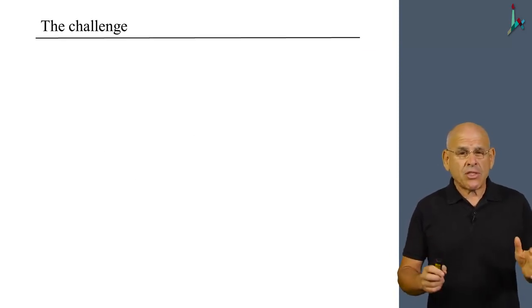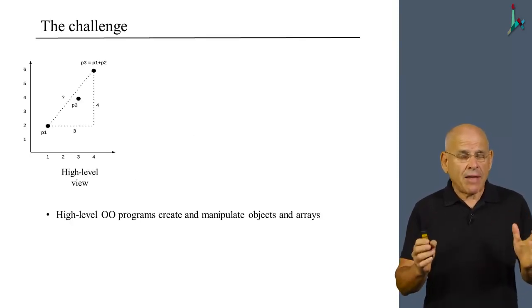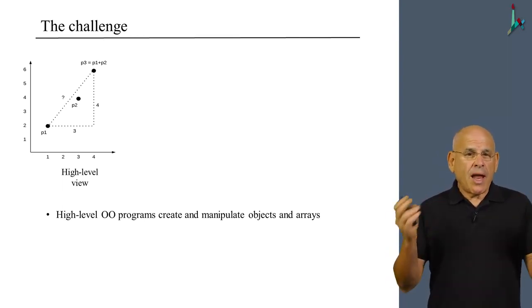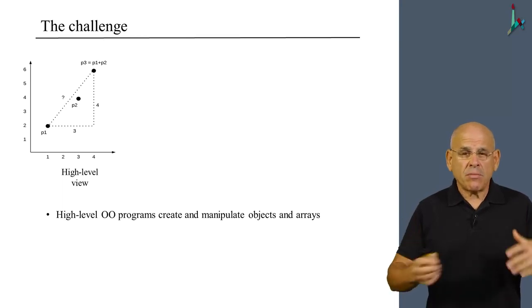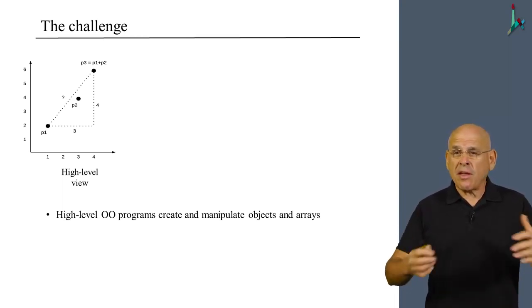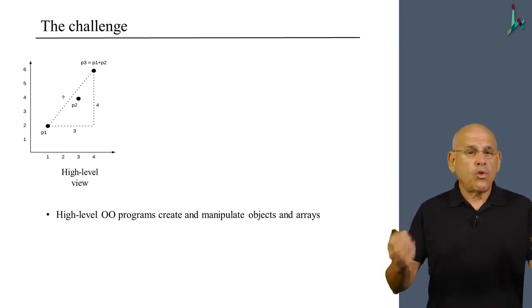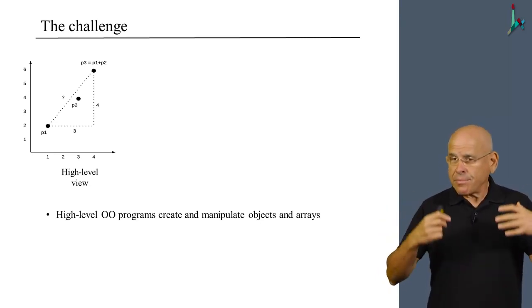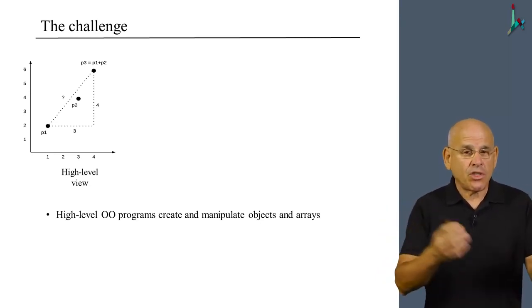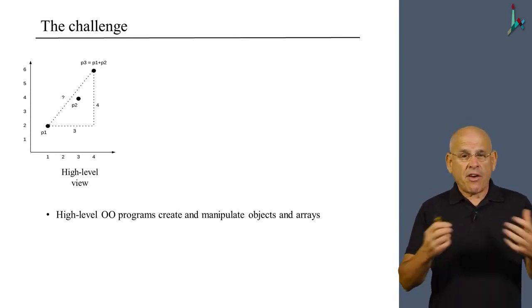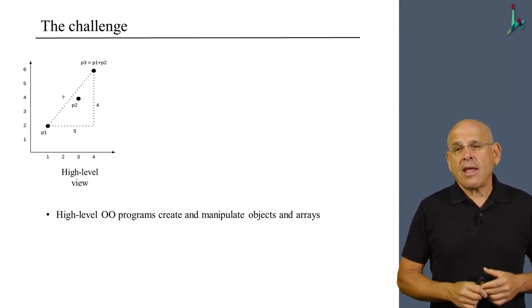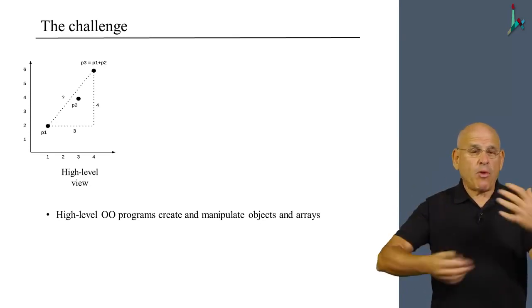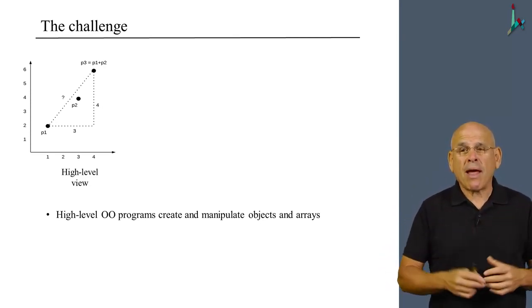When you write a high-level object-oriented program, you can allow yourself the luxury to think in terms of all sorts of abstractions. You think in terms of, for example, two-dimensional points being objects that are implemented in a language like Jack or Java, which is very programmer friendly. It allows you to think about these points and about the algebraic operations that you can apply on these points, almost like a mathematician.